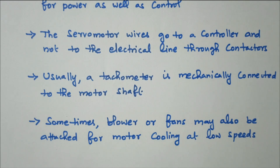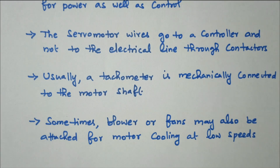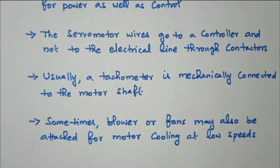In this video we discussed the servo motor: what is meant by a servo motor, how it differs, its main applications, and its capabilities compared to large industrial motors. The main purpose is control — not rotation — so it is managed by a dedicated controller that gives instructions for all operations. Separate videos for AC and DC servo motors are available; links are in the description box. Subscribe to the channel for more videos and notifications. Thank you for listening; all the best for your examination.